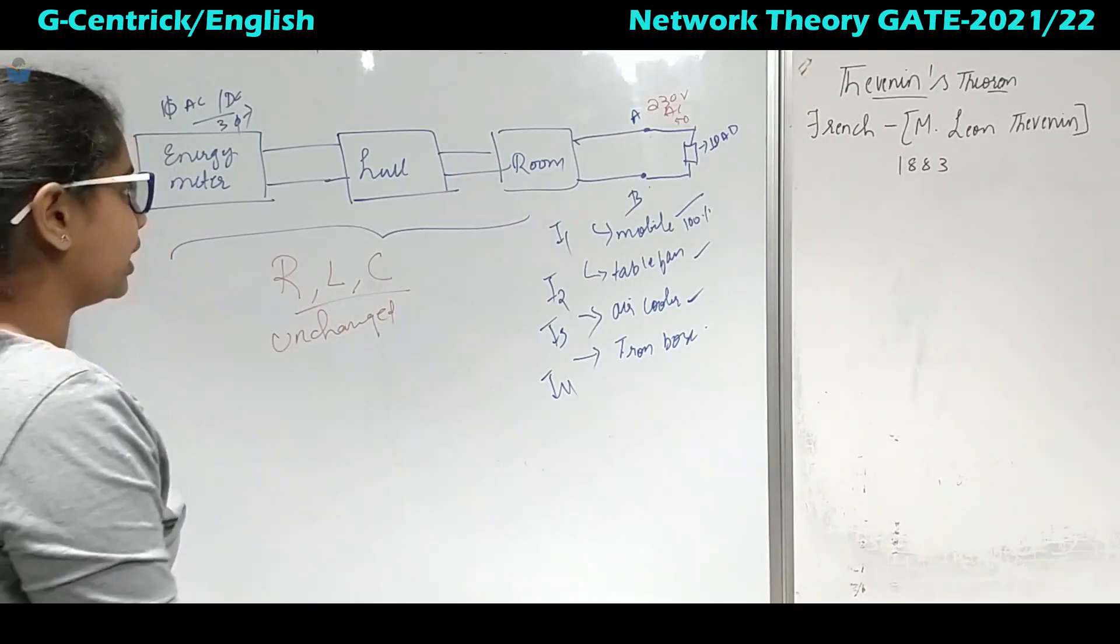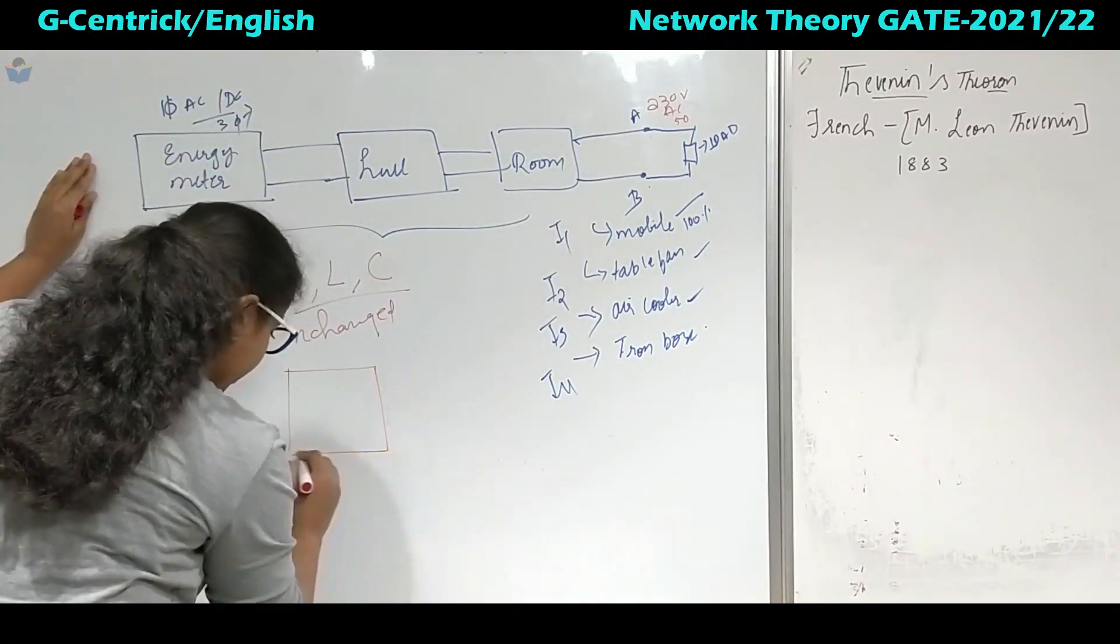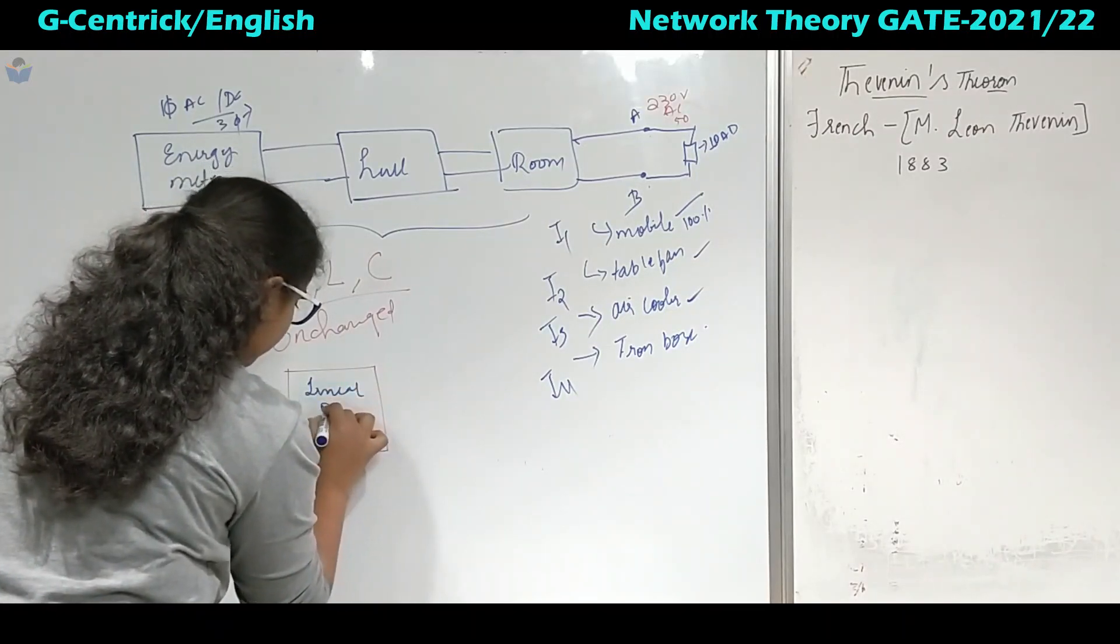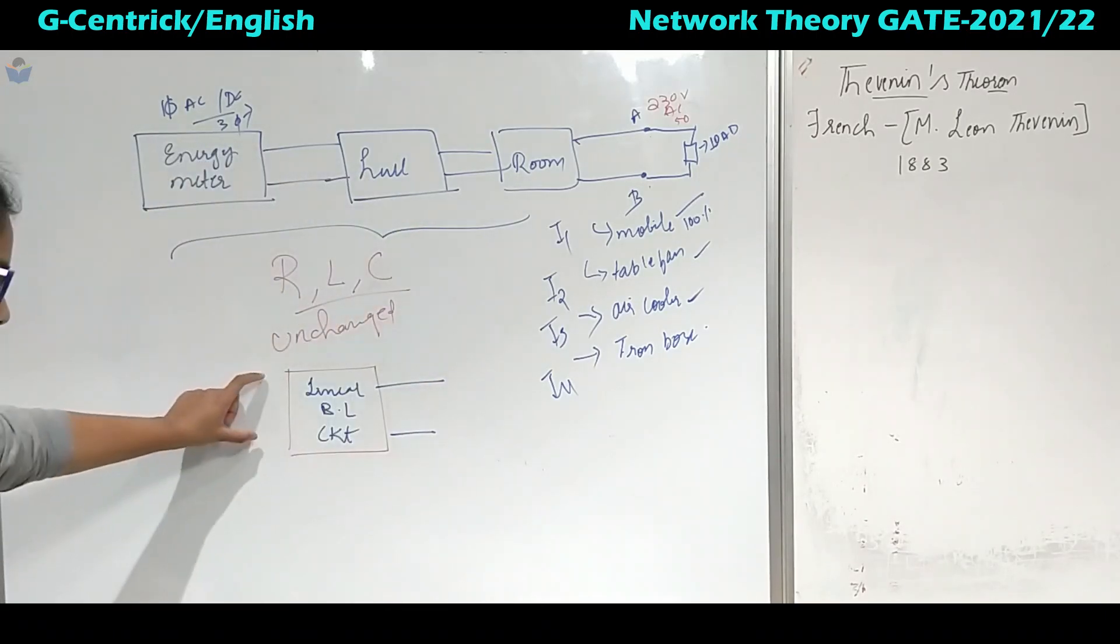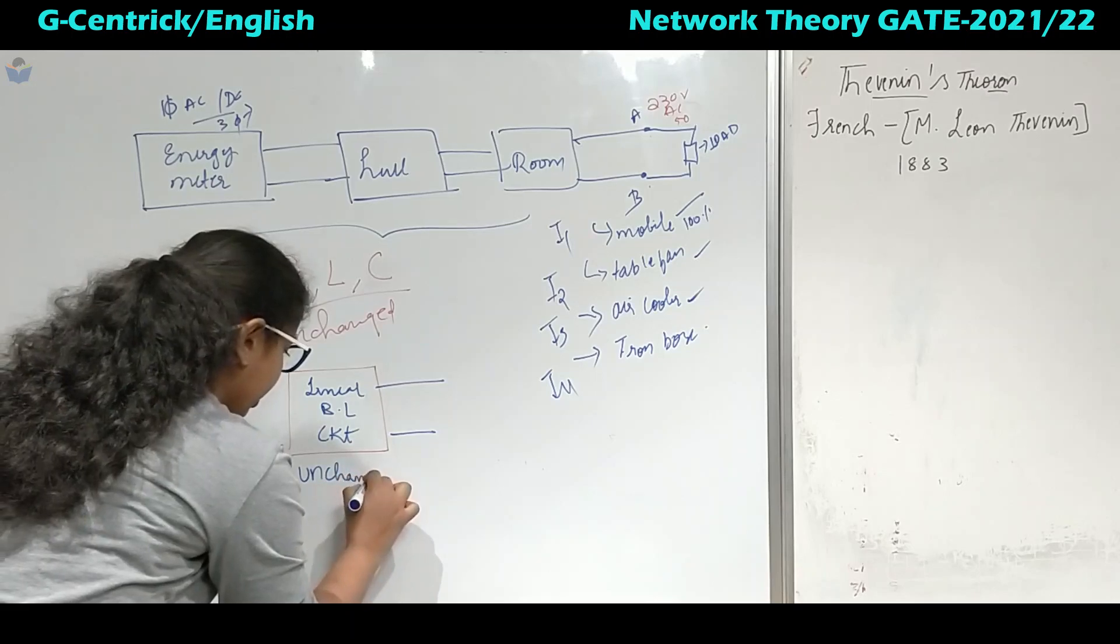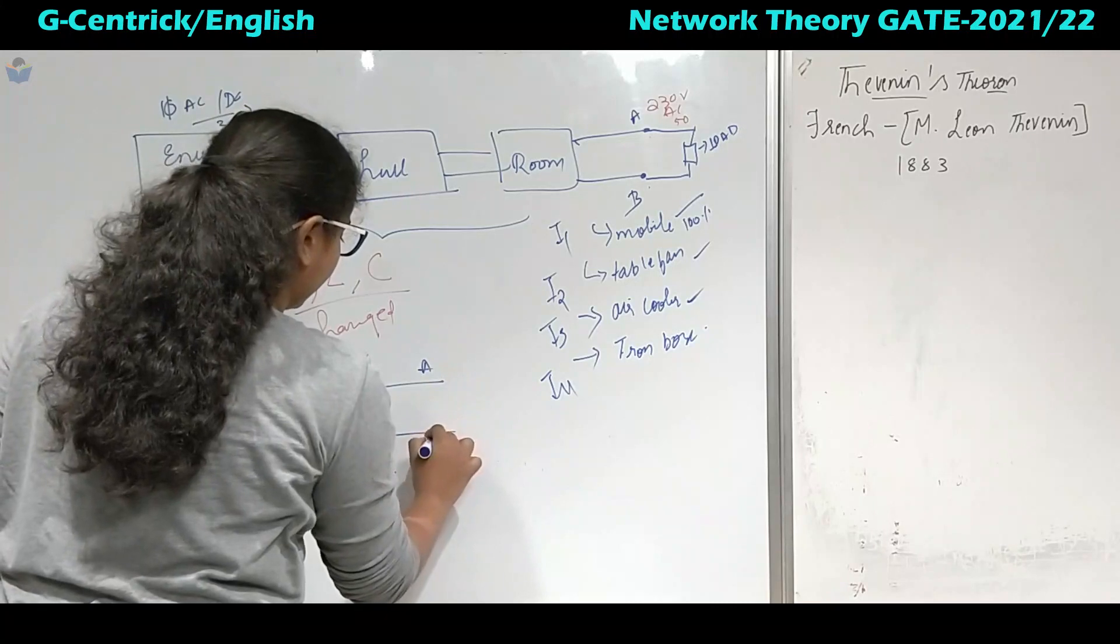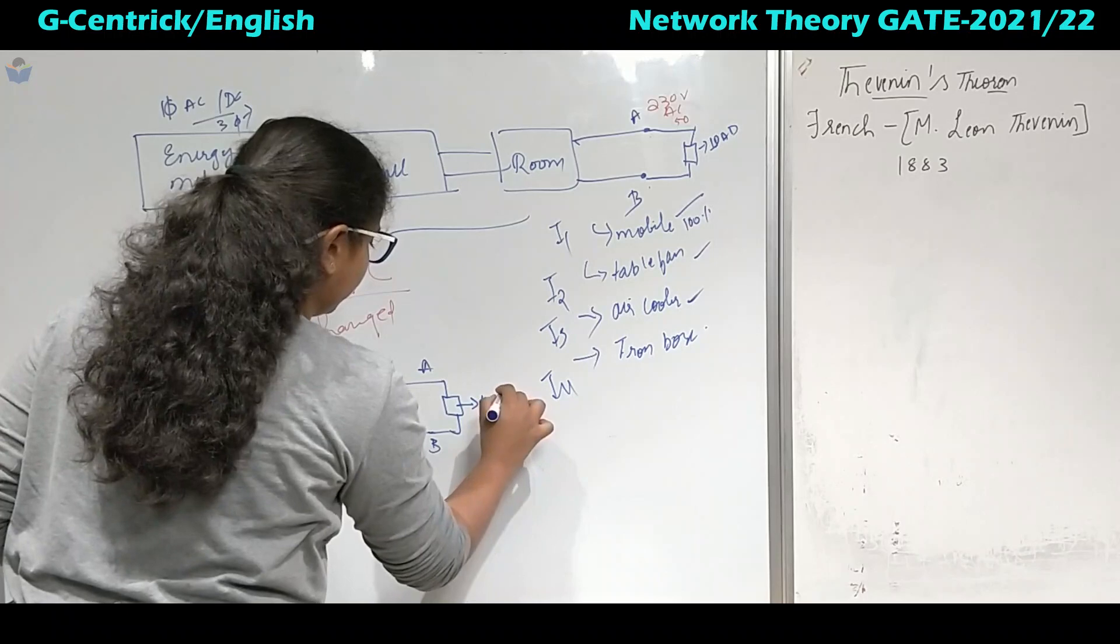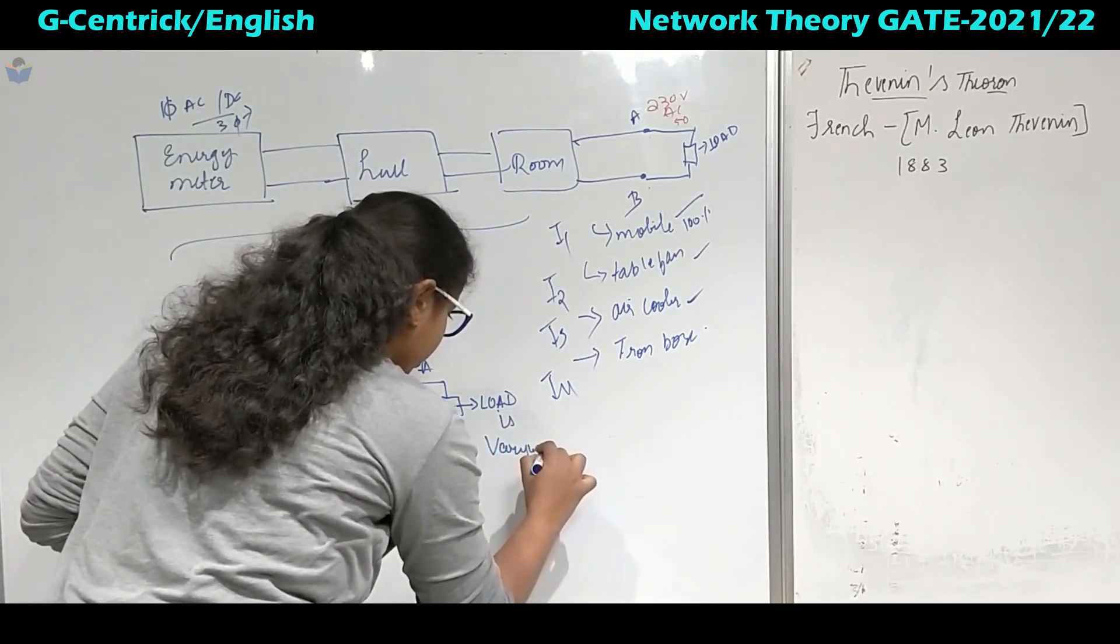What did Thevenin do is that he said since these portions are unchanged, we will take this as linear bilateral circuit. This becomes linear bilateral circuit unchanged. There is no change in the circuit, but after this terminal A and B we have got this load which is continuously varying. This load is varying.